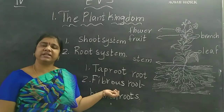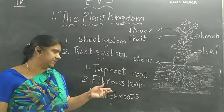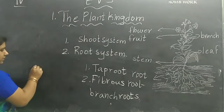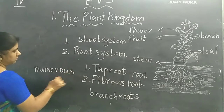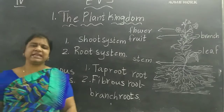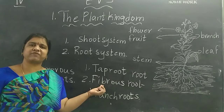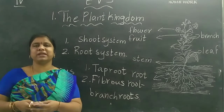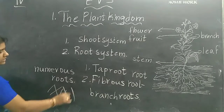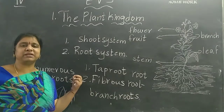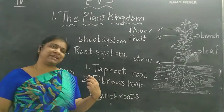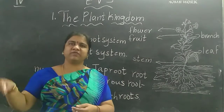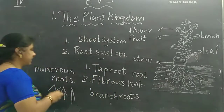The second type is fibrous root. In this system the primary root usually dies at an early stage and is replaced by numerous roots that develop from the stem. These roots grow sideways in all directions.